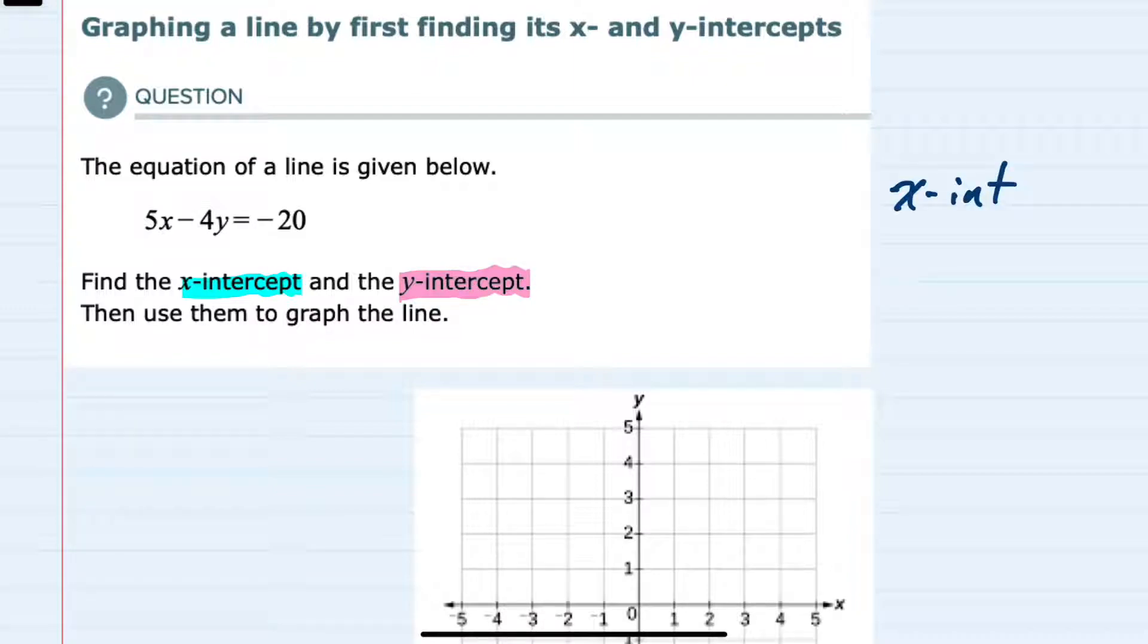Starting with the x-intercept, we know that the x-intercept where the line crosses the x-axis will have a y-value of 0. So to find the x-value here, we will substitute a 0 in for y and solve for x. So we would have 5x minus 4 times 0 equals negative 20.